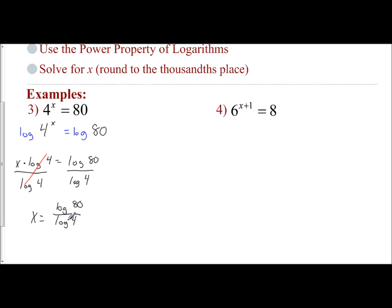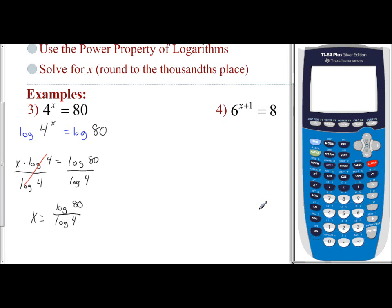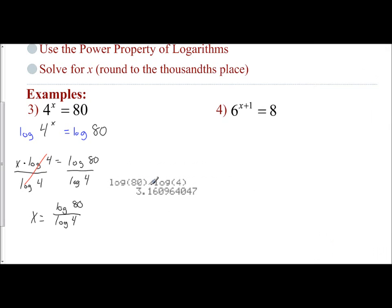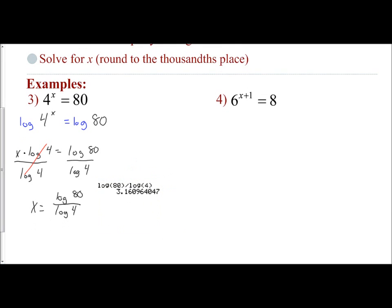And I'm going to go right to my calculator and find that value. So I have log 80, close the parentheses, divided by log 4, close the parentheses, hit enter. And the value is 3.1609. I want to round to the thousandths. So that 9 rounds that 0 up to a 1. And so I have x equals 3.161.